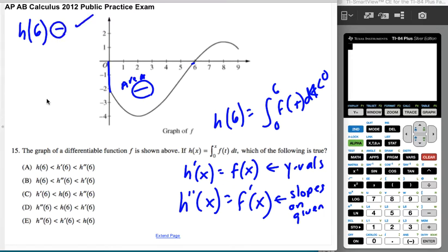The actual y-value, h'(6), which is just the y-value at 6, is definitely 0.